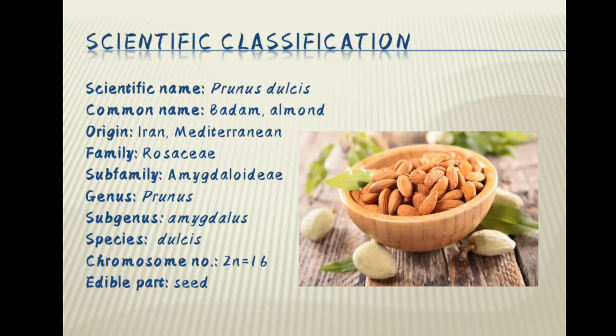Scientific classification. The scientific name of almond is Prunus dulcis. Common names are badame and almond. The origin is from Iran or the Mediterranean region. Family is Rosaceae. Subfamily Amygdaloidae. Genus is Prunus. Subgenus Amygdalus. Species dulcis. Chromosome number 16 and the edible part is seed.